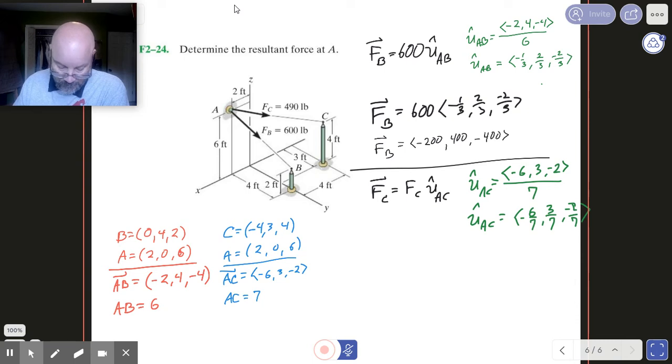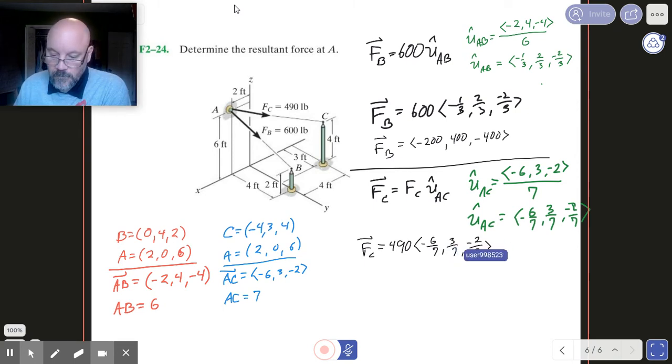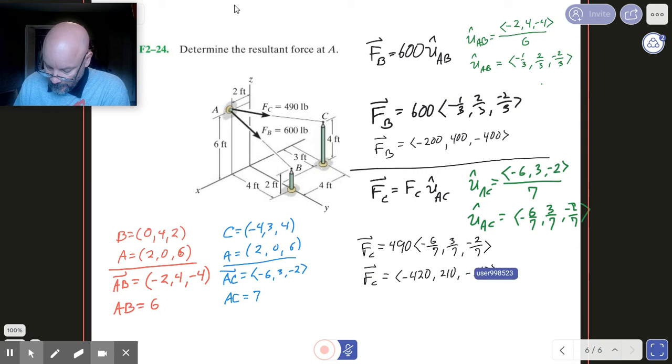And plug back in here. So F sub C, that's 490 times our unit vector, minus 6 sevenths, 3 sevenths, and minus 2 sevenths. There we go. And so F sub C then turns out to be minus 420, 210, and minus 140.